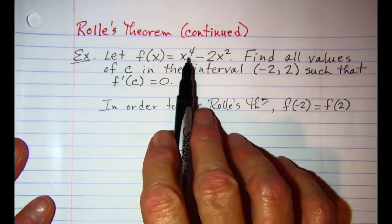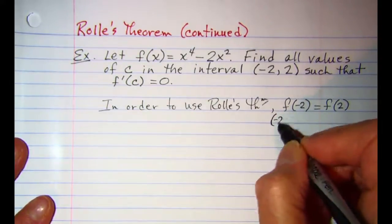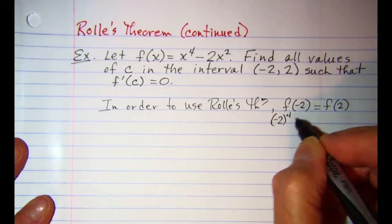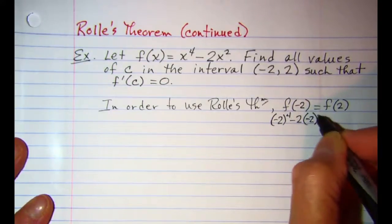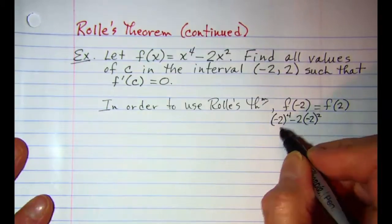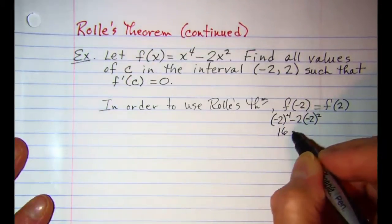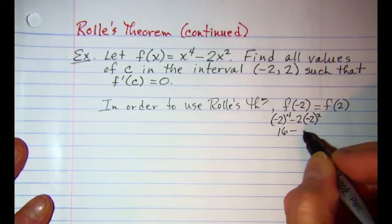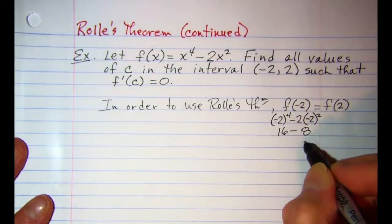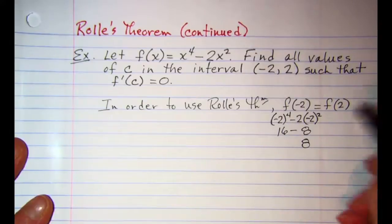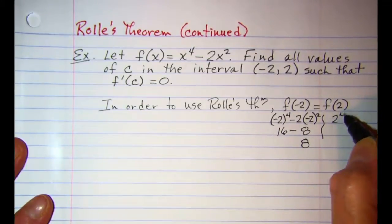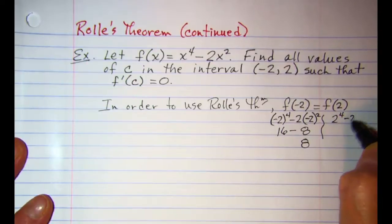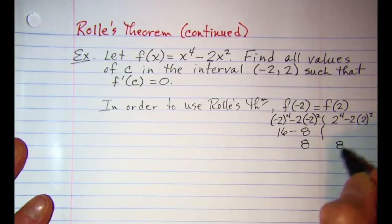f of negative two would be negative two raised to the fourth power minus two times negative two raised to the second power which is eight. And then f of two is going to be two to the fourth power minus two times two to the second power which is also eight.